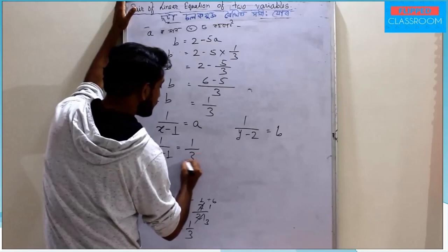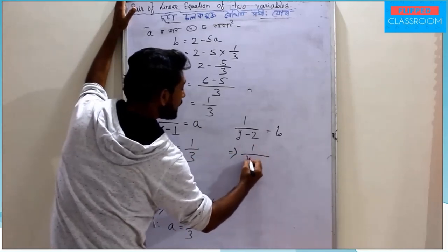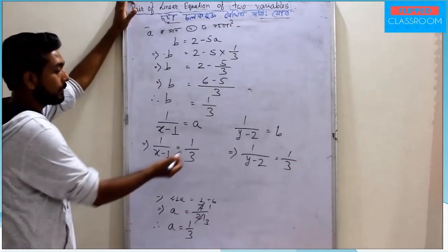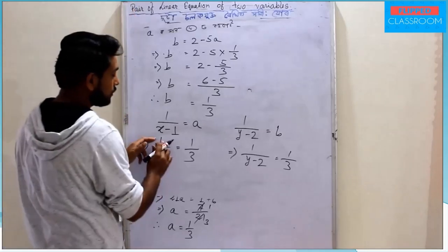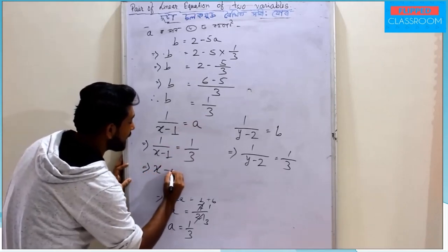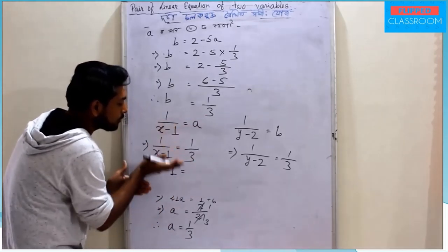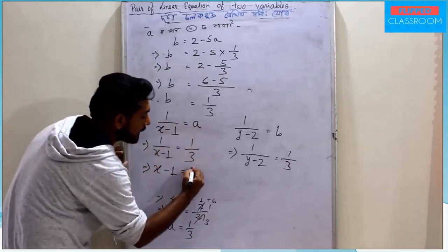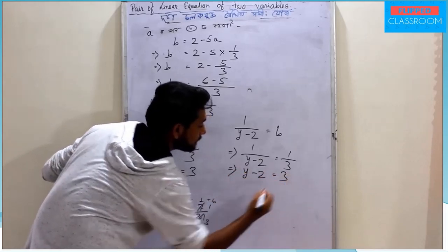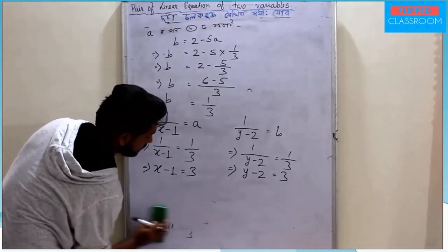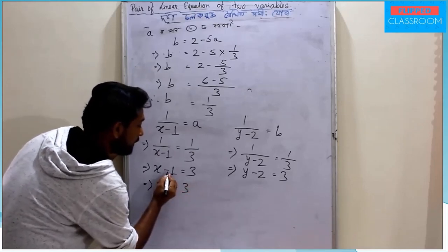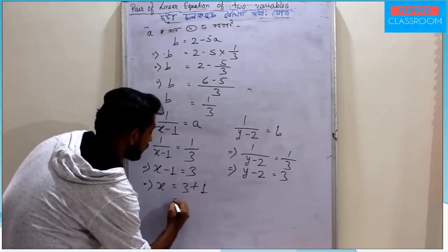So a equals 1 by 3 and b equals 1 by 3. Then x minus 1 equals 3, so x equals 4? And y minus 2 equals 3, so y-2 is 3, meaning y equals 5.